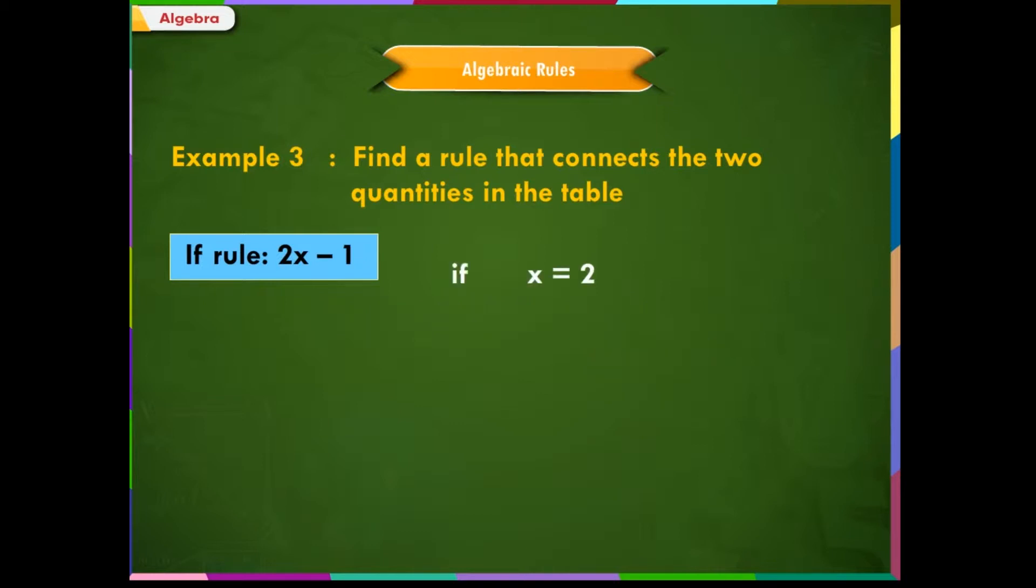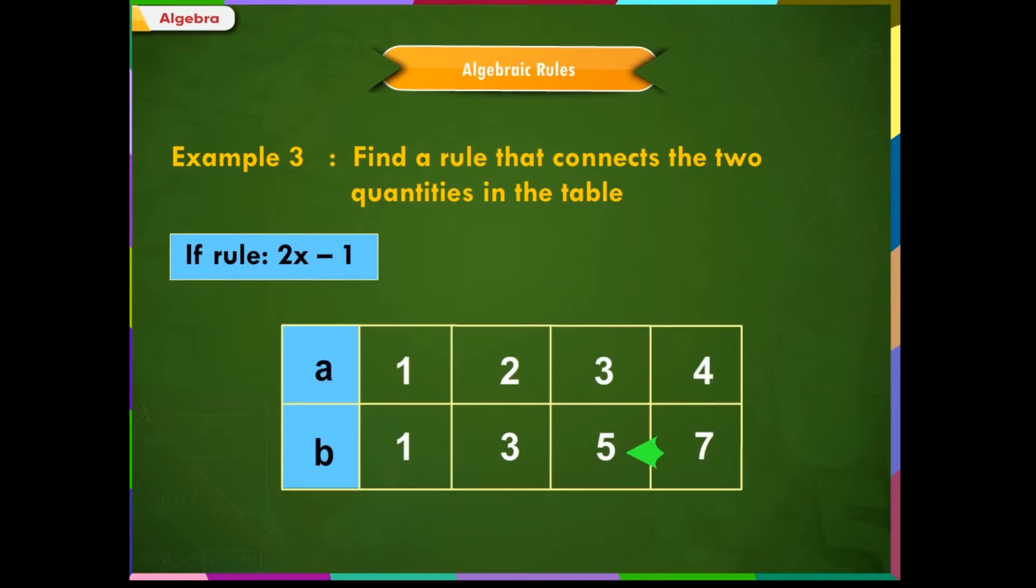Similarly, if x is equal to 3, then 2x minus 1 is equal to 2 into 3 is 6, and minus 1 is 5. And we have the third number 5 in B. Thus, the rule that connects the two quantities in the table is the algebraic statement 2x minus 1.